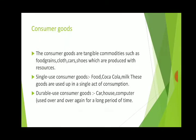Consumer Goods are tangible commodities — tangible means they can be seen and touched. Consumer goods such as food grains, clothes, cars, and shoes are produced with resources. Consumer Goods are further classified into two categories: Single Use Consumer Goods and Durable Consumer Goods. Single Use Consumer Goods are used up in a single act of consumption, like food, Coca-Cola, and milk.